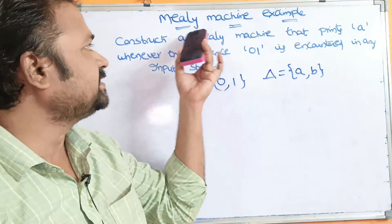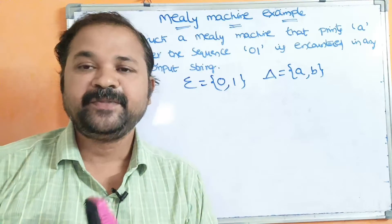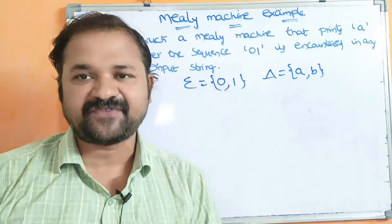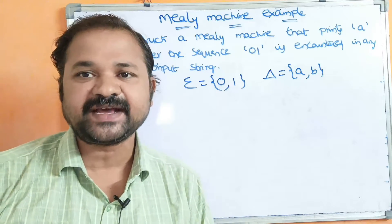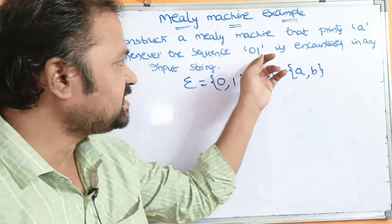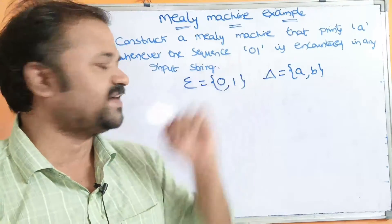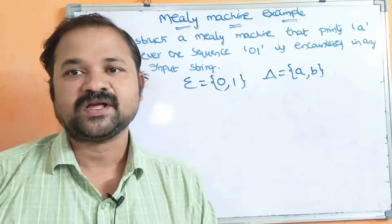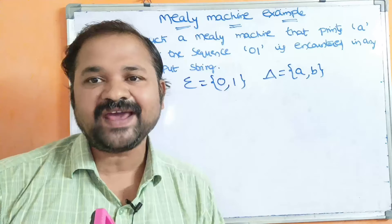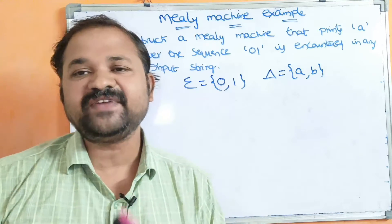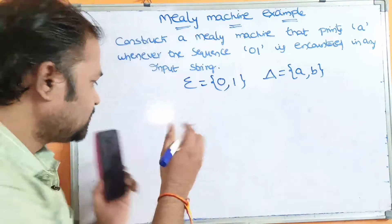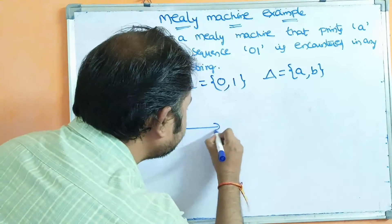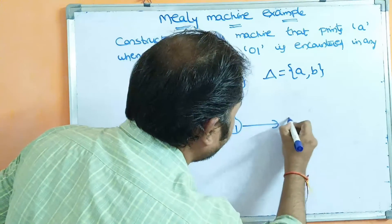Now we have to design the Mealy machine. A Mealy machine is nothing but a DFA, except that a DFA contains a final state but a Mealy machine doesn't have any final state. Here the sequence is 0,1, which contains 2 symbols. So if there are 2 symbols, then we require 2 plus 1, so totally we require 3 states. Let the first state be Q0, the second state Q1, and the next state Q2.